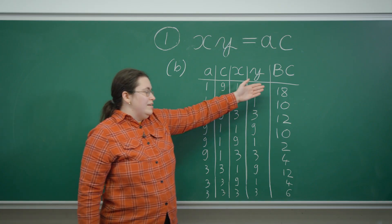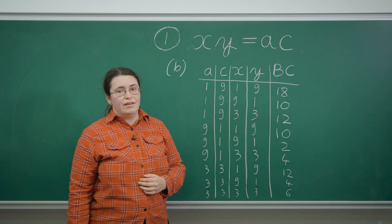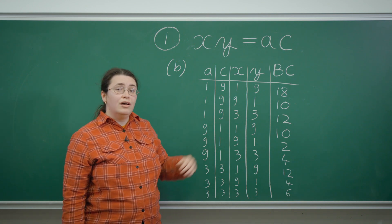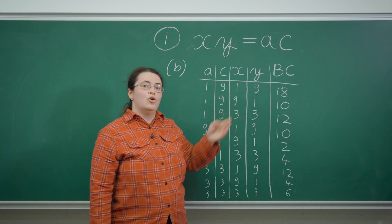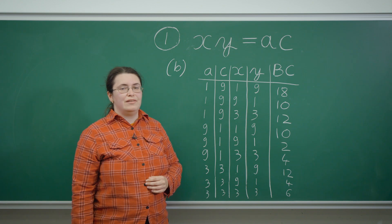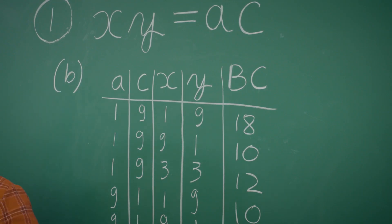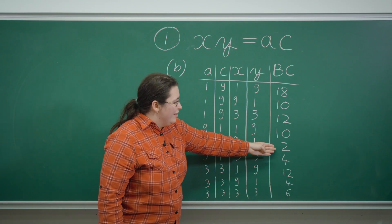So while it would have been easy to come up with the possible values for BC simply by considering the possible values of C and Y, by looking at it in this table layout we have shown that indeed all these possible values of BC really do lead to a valid construction in the original diagram. The correct answer therefore is 2, 4, 6, 10, 12, or 18 are the possible values for BC.